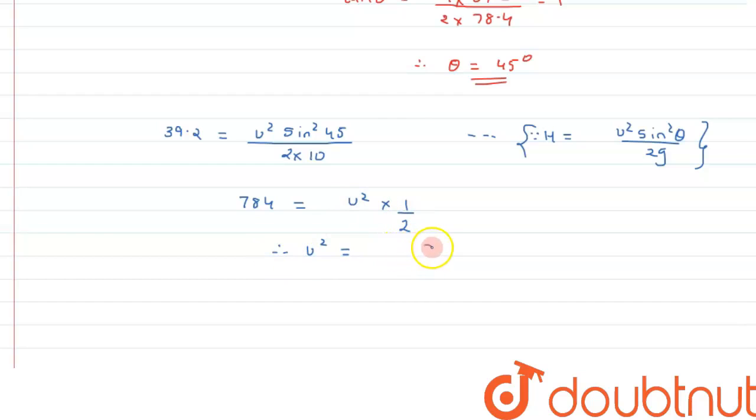Therefore we can say the value of u comes out to be 28.6 meters per second. Alright.